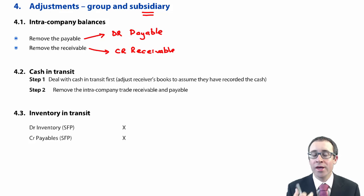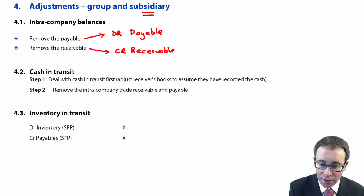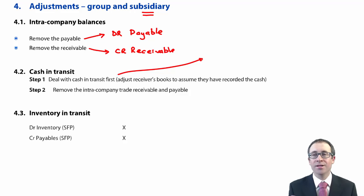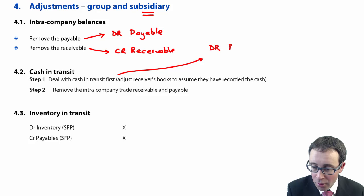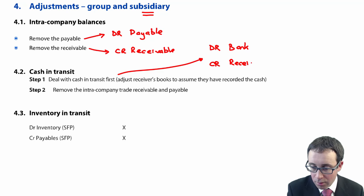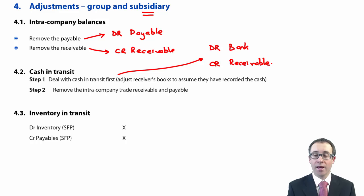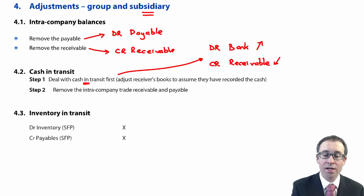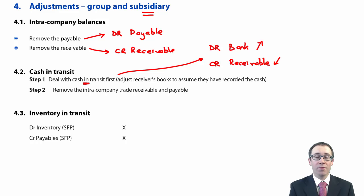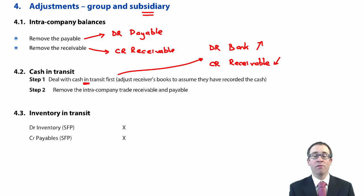However, what happens if those intercompany balances are not equal? You have cash in transit. Before you remove the intercompany balances, deal with the cash in transit first. Think of it as a cash receipt from a normal credit customer: debit your bank and credit your receivable, increasing the bank balance and reducing the receivable by the amount of cash in transit. Once done, you then remove the equal intra-group balances.